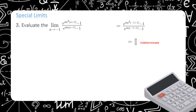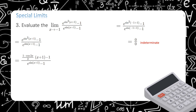We expand the equation. The value of sin²(x) can be written as (1 - cos(2x))/2. Substituting this into the numerator, we get e^((1 - cos(2x))/2 · (x+1)) - 1 over e^(sin(x+1)) - 1. Simplifying the numerator further gives us 1 - cos((x²) + x) over e^(sin(x+1)) - 1.